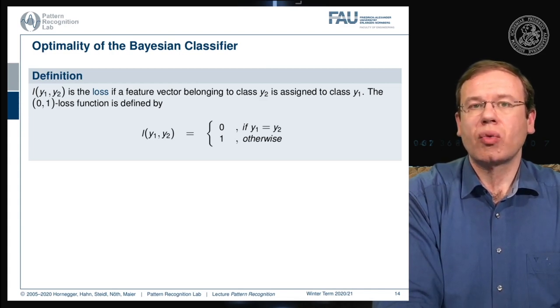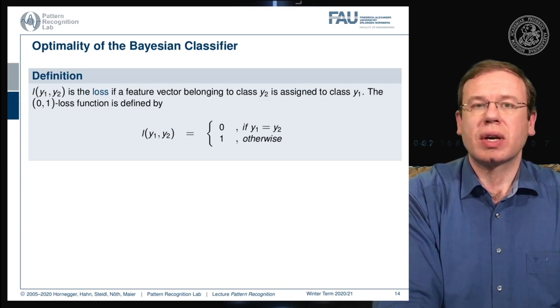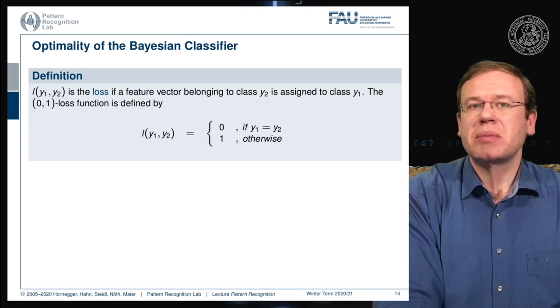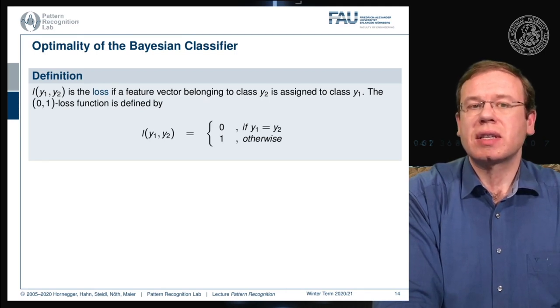Here we only recall that you can associate any decision to a kind of risk or loss and this loss function then tells you what kind of damage is done if you decide for the wrong class.